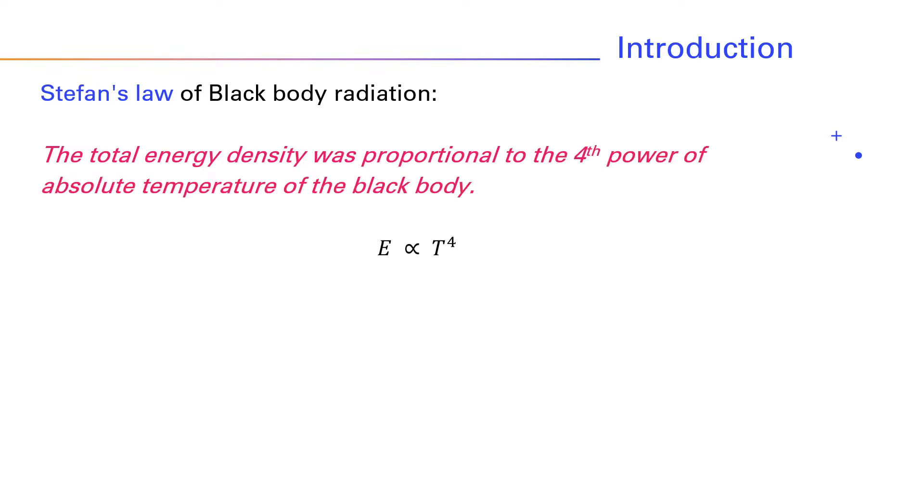That is, E is proportional to fourth power of T. Stefan's law of black body radiation is thus given by E is equal to sigma T to the fourth power, where sigma is Stefan's constant. Its value is 5.67 × 10^-8 watt per meter squared K to the fourth.